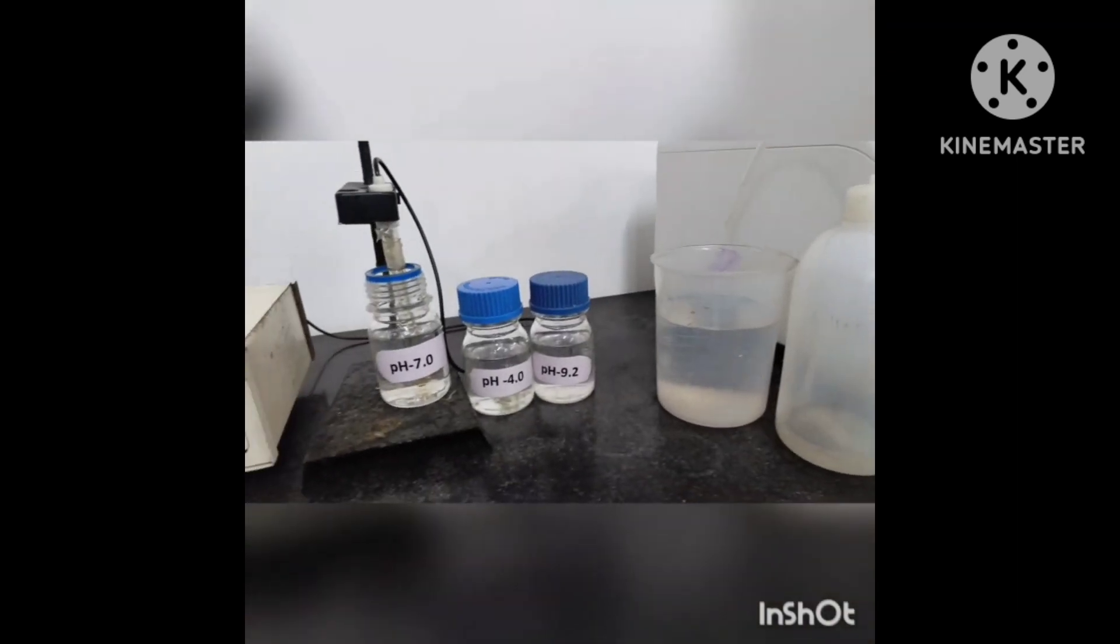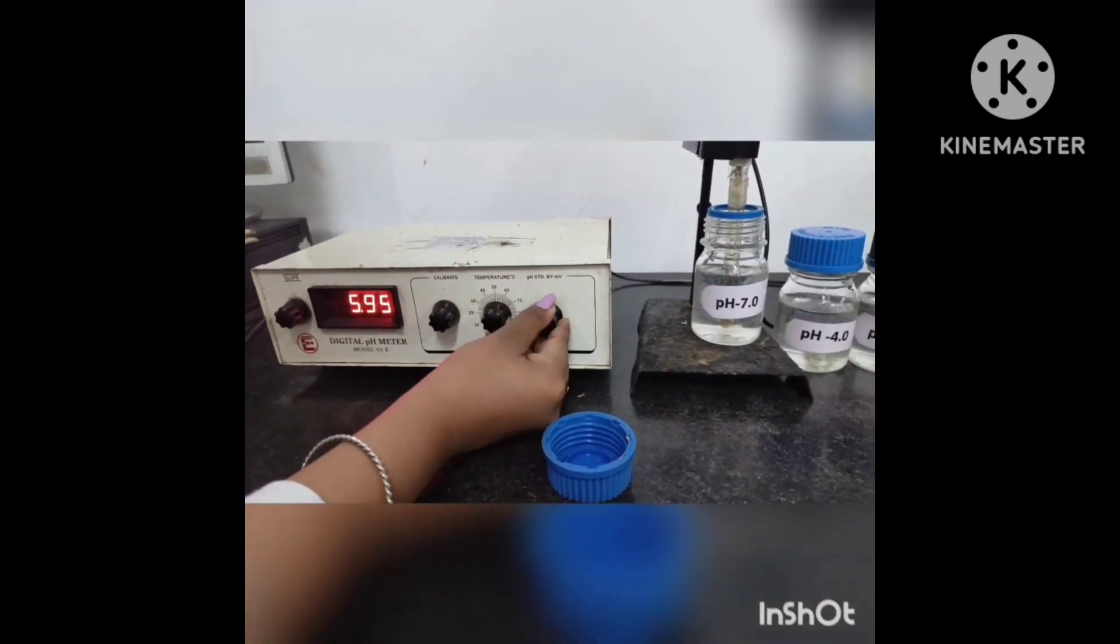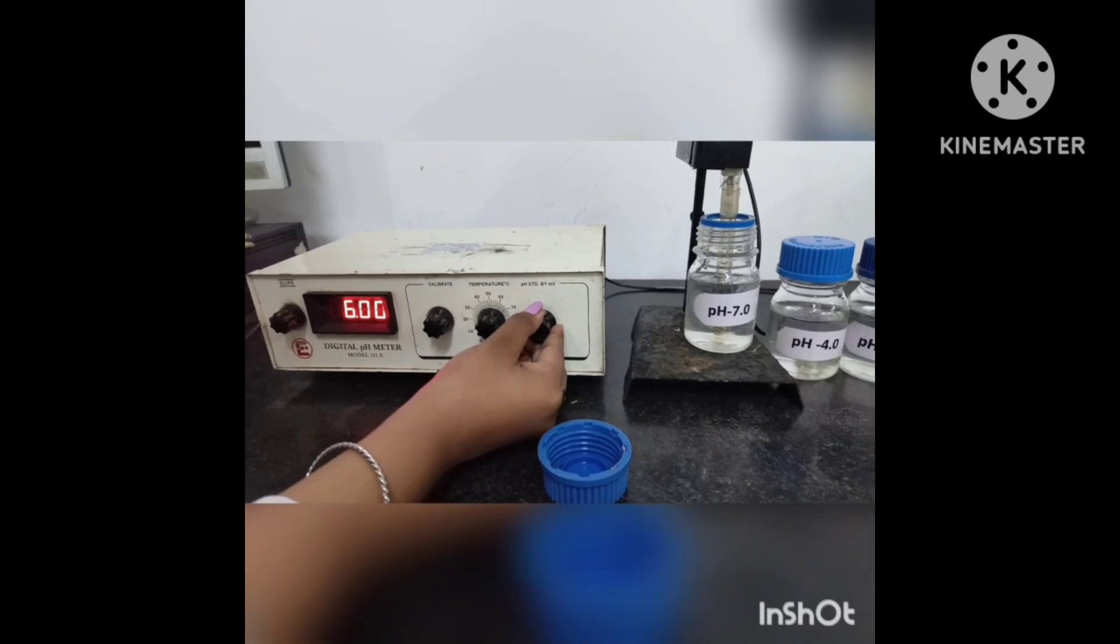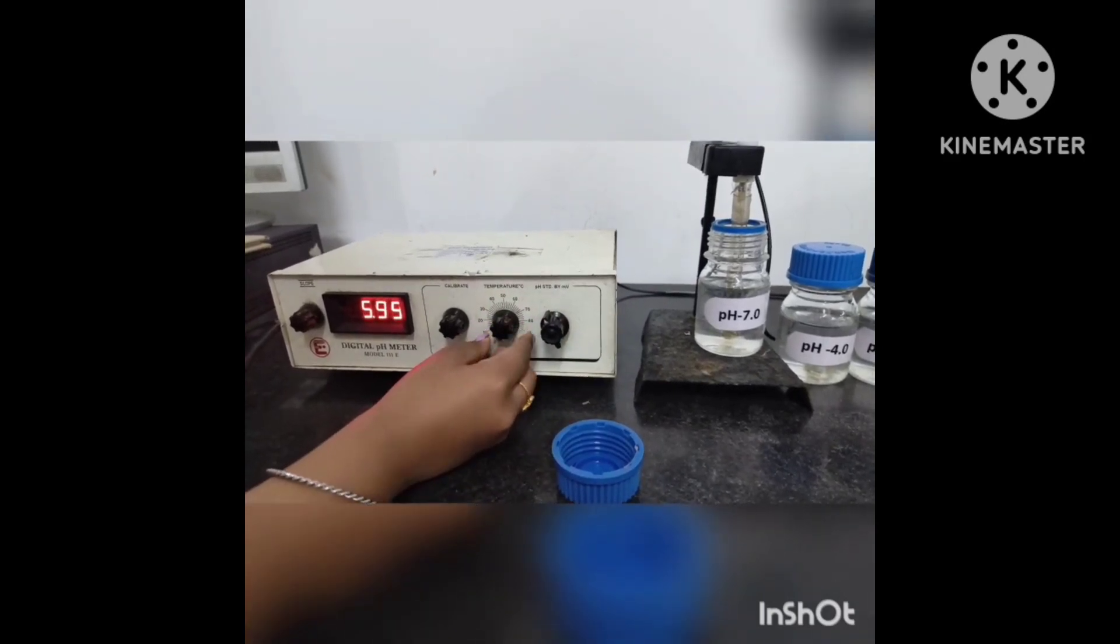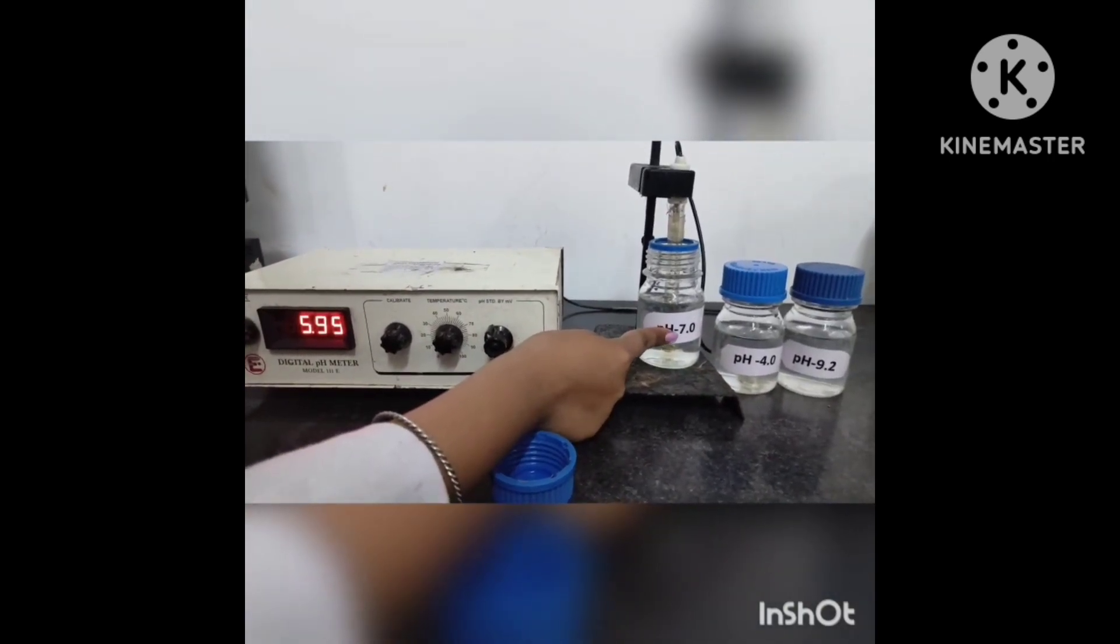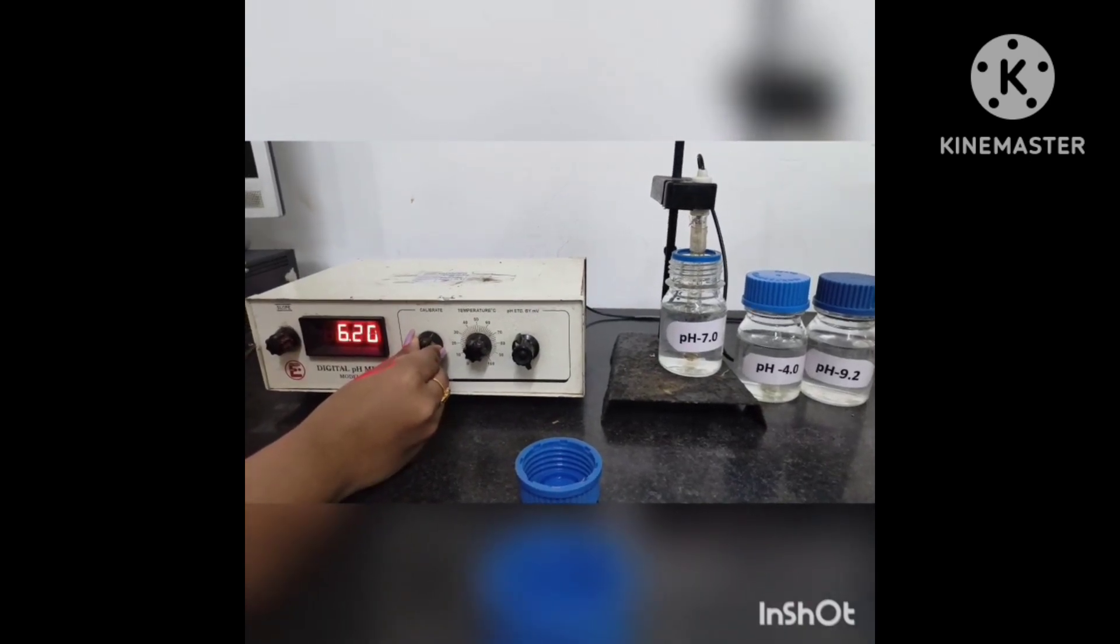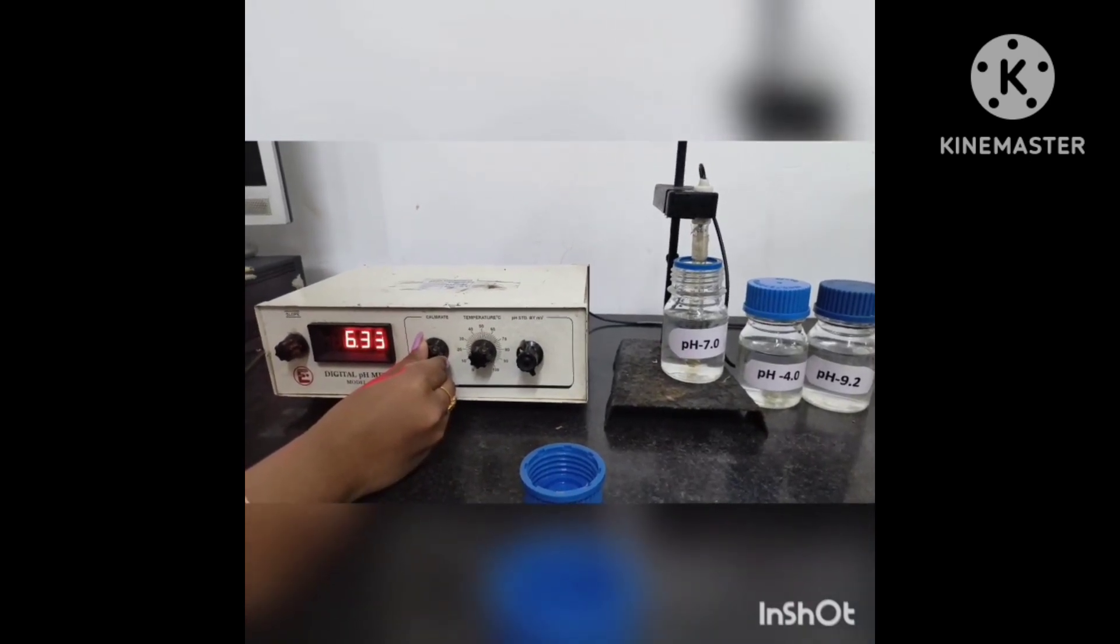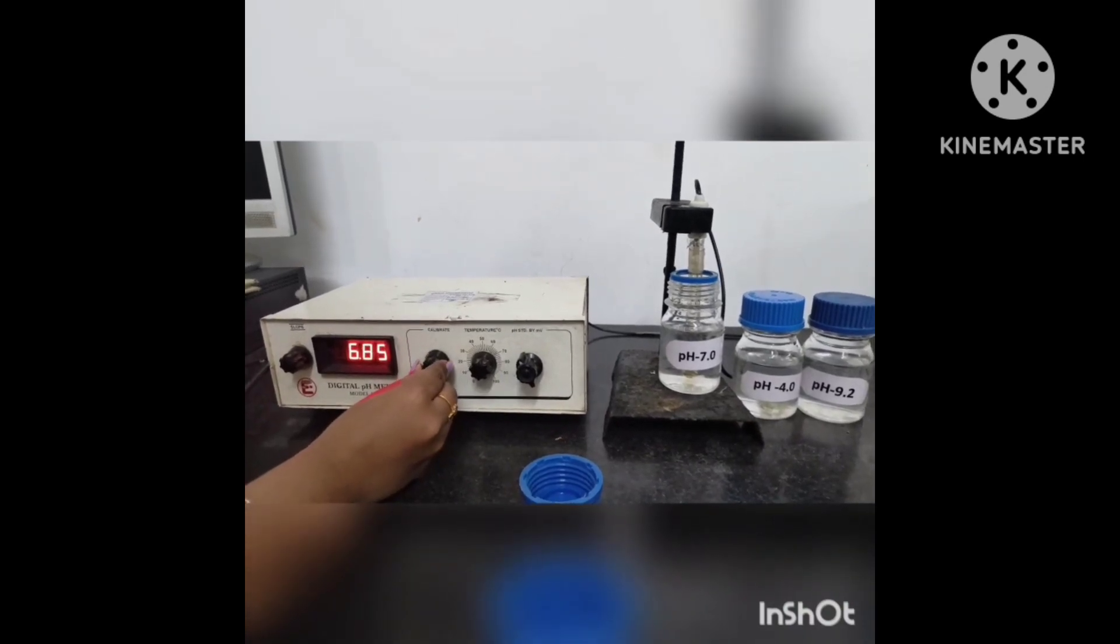The simple working of pH meter includes: First, the standardization or calibration of the pH meter. Second, dip electrode in the standard solution. Third, adjust the knob according to the known standards. Fourth, cross-check the standard solution for proper calibration. Fifth, dip electrode in the sample and note down the reading as pH.